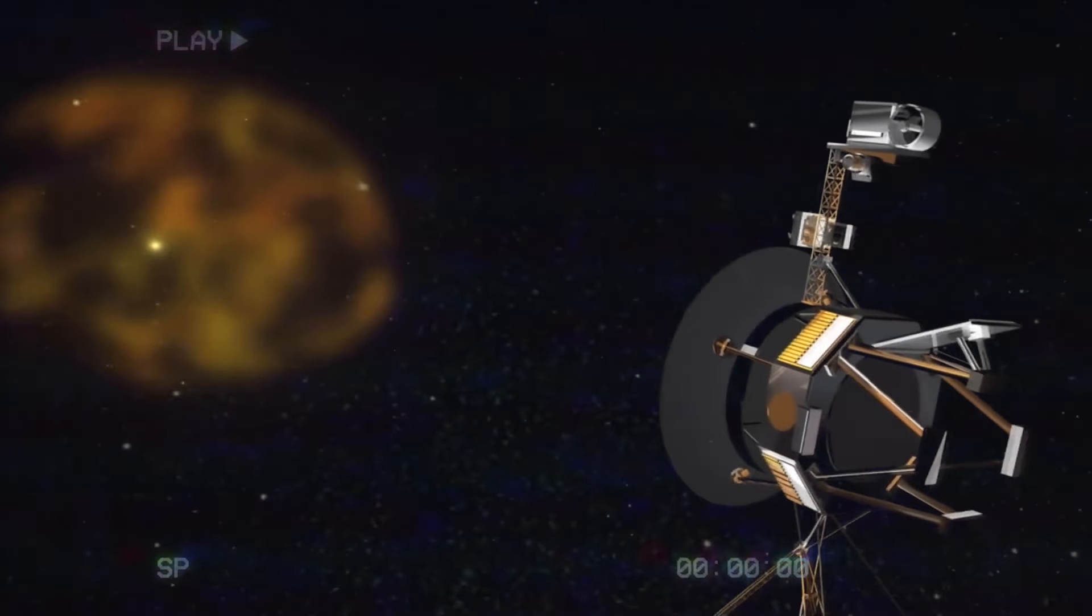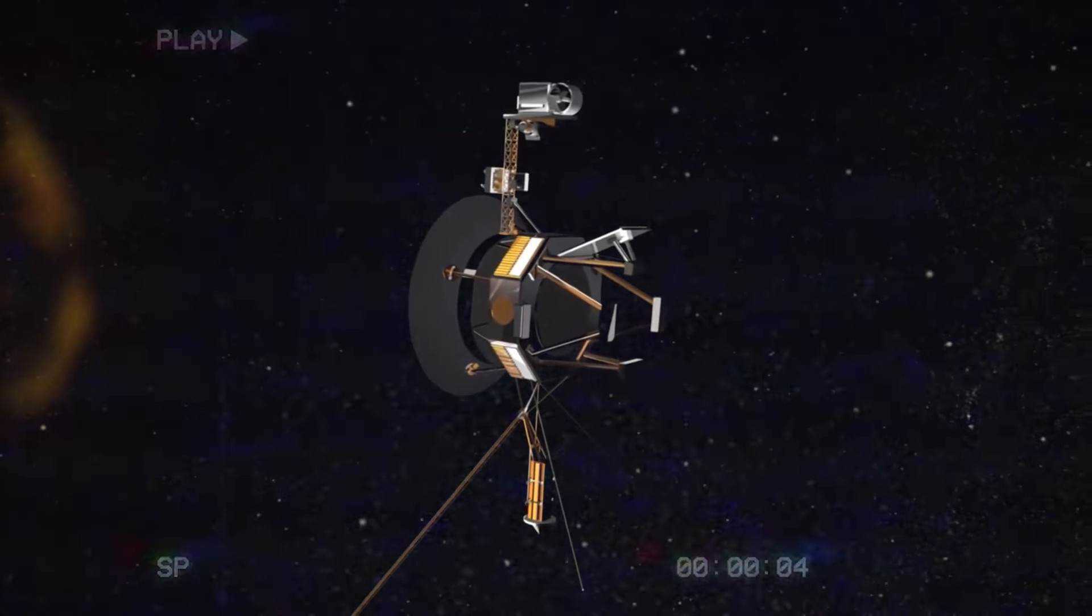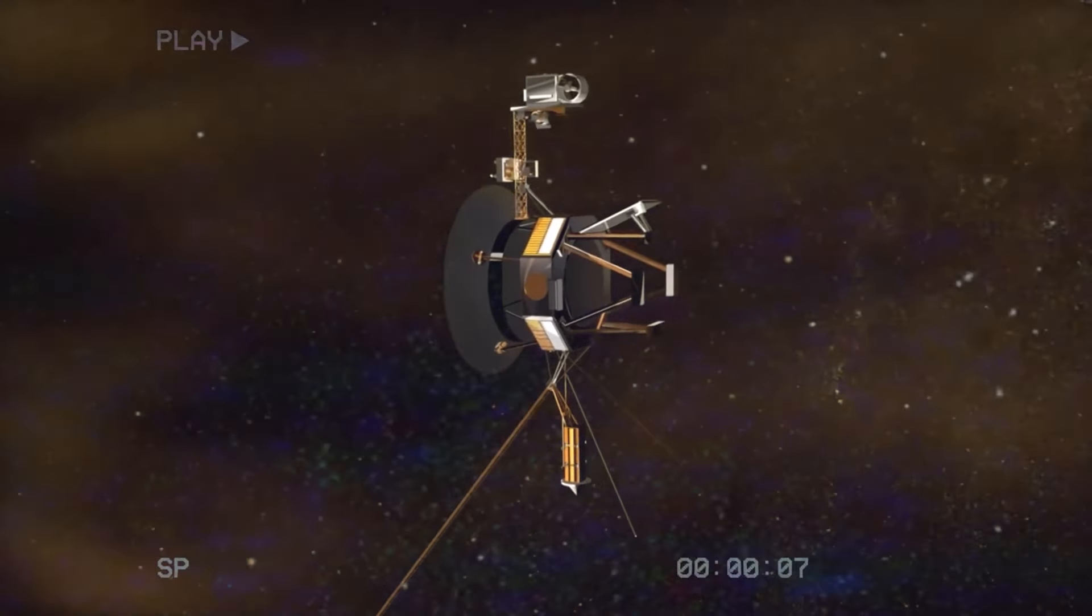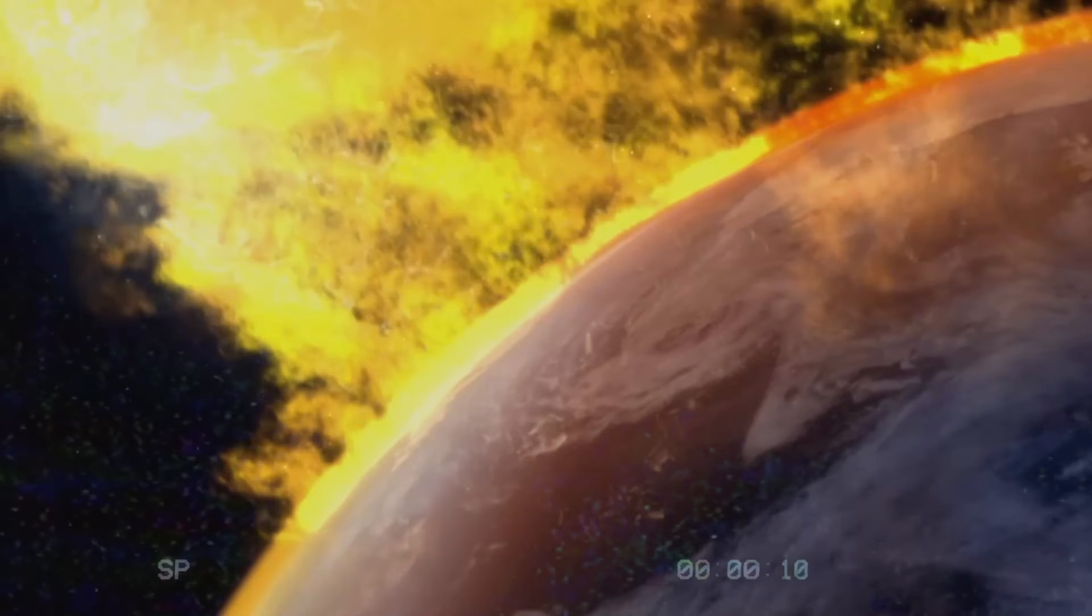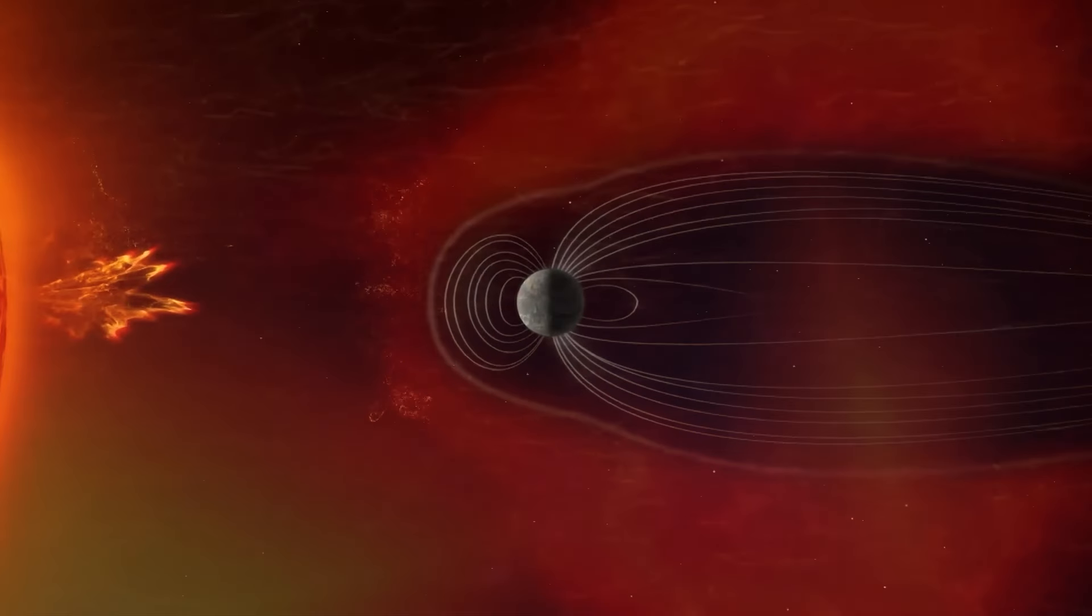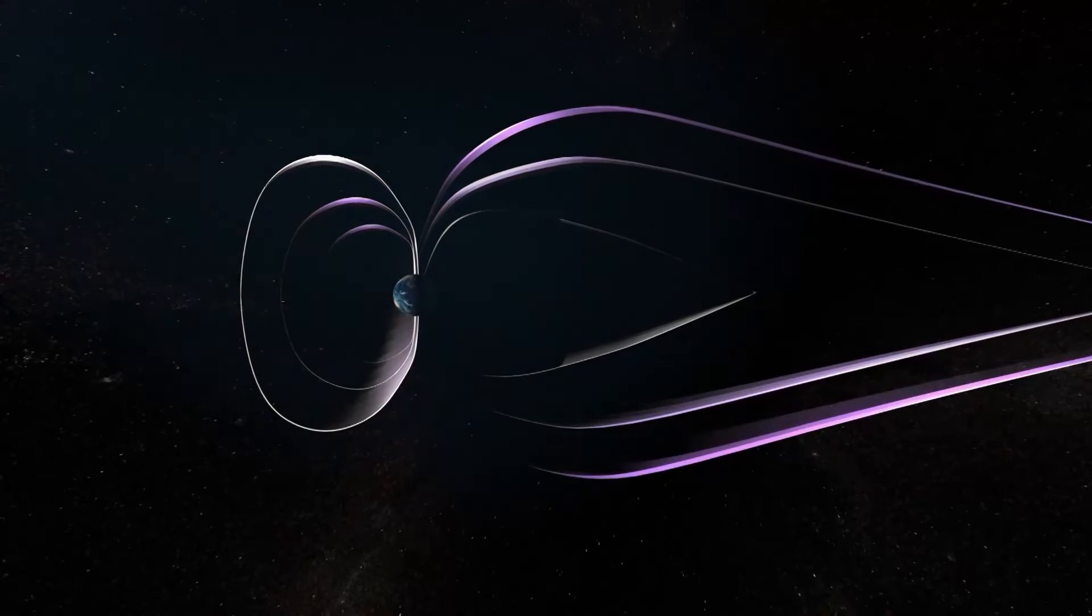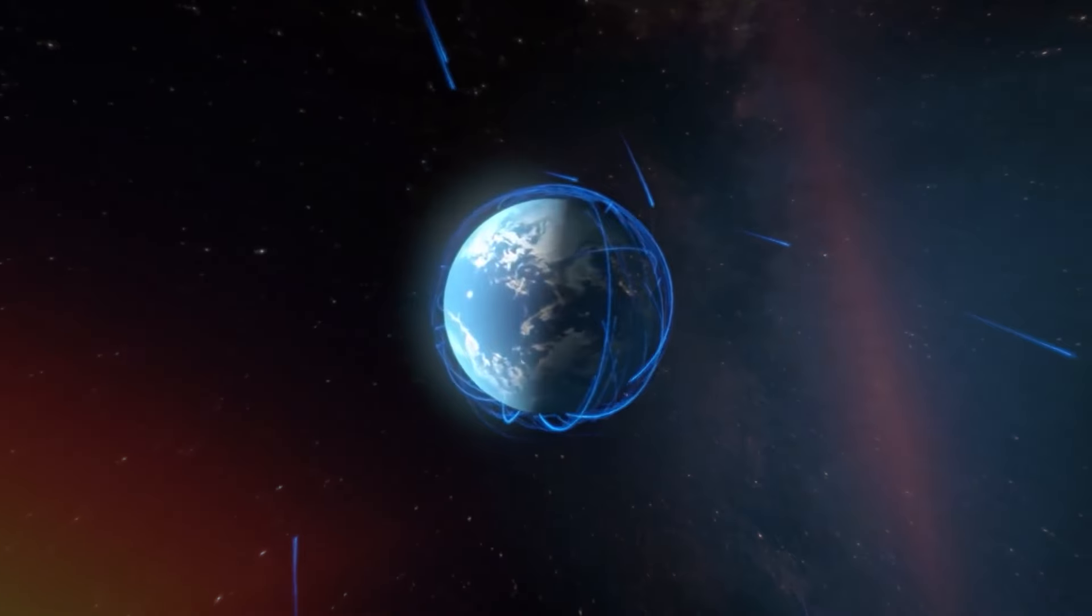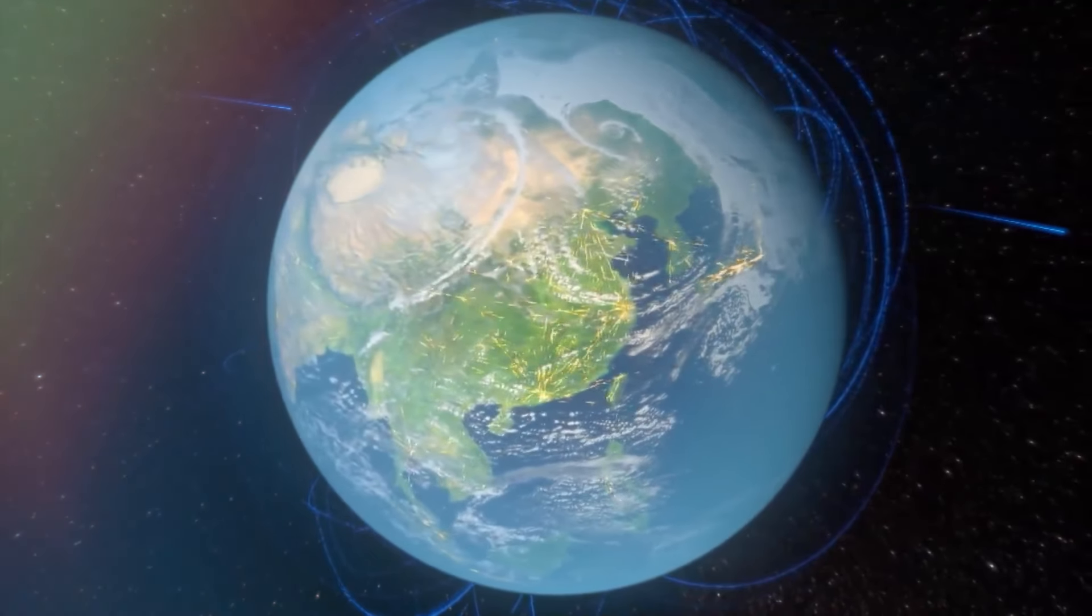Solar flares are sudden, intense bursts of radiation emanating from the Sun's surface, caused by the release of magnetic energy stored in the Sun's atmosphere. These flares can produce significant amounts of X-rays and ultraviolet radiation. Coronal mass ejections, on the other hand, are massive bursts of solar wind and magnetic fields, rising above the solar corona or being released into space. Both phenomena can have profound effects on Earth's magnetosphere and ionosphere.